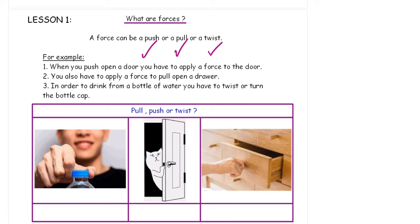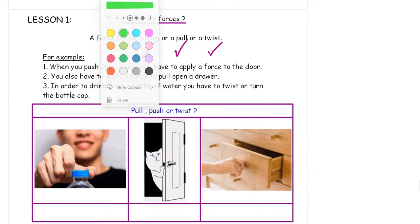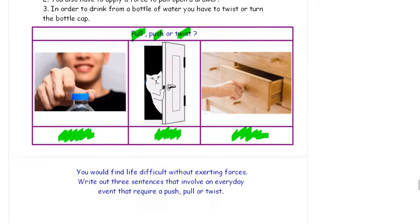you also have to apply a force to pull open a drawer. And number three, in order to drink a bottle of water, you have to twist or turn the cap off. You need to put pull, push or twist into the correct box below. Nice and easy to start off with.